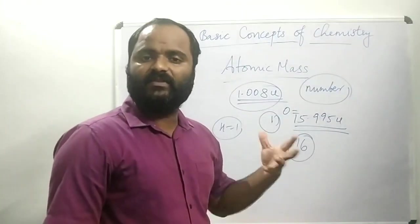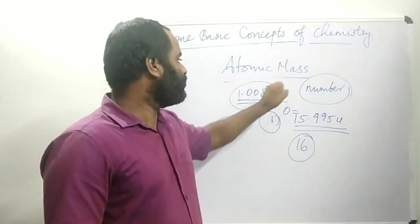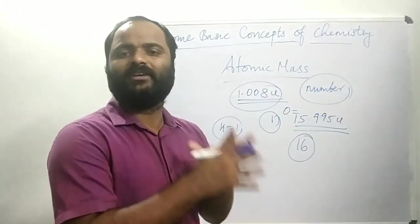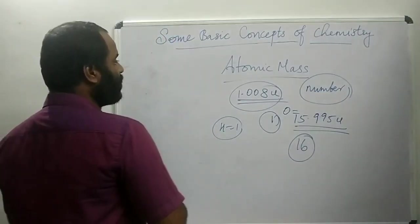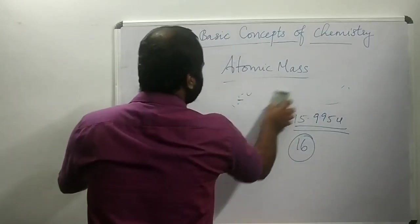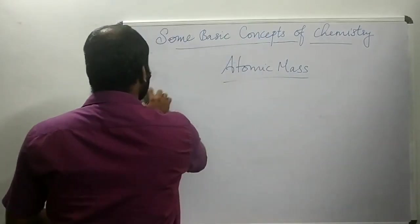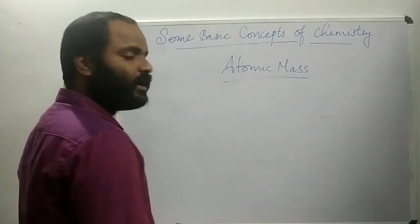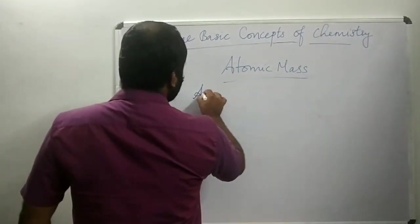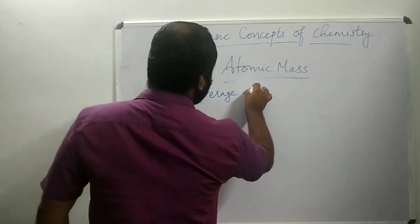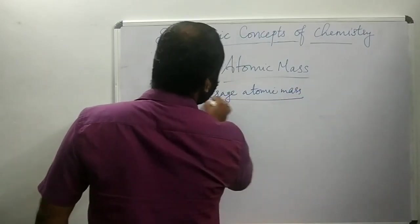Atomic mass is a number representing how many times heavier an atom is than 1/12th the mass of a carbon-12 atom — that is, mass of an atom divided by 1/12th mass of carbon-12 atom. We also have another concept: average atomic mass.